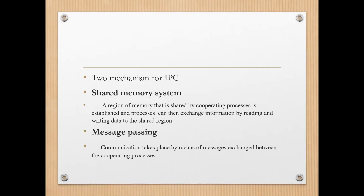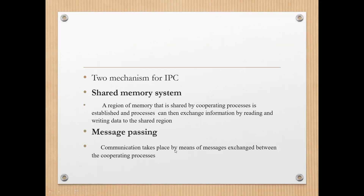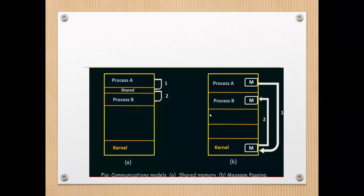The second model is message passing. In the message passing model, communication takes place by means of messages which are exchanged between the cooperating processes. A message in a certain format will be passed through the kernel to the different processes. Looking at a diagram will give a better idea of both the shared memory model and the message passing model.